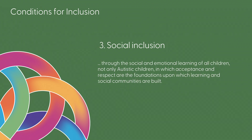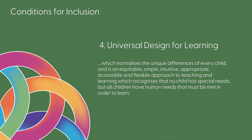Three: social inclusion through the social and emotional learning of all children, not only autistic children, in which acceptance and respect are the foundations upon which learning and social communities are built.